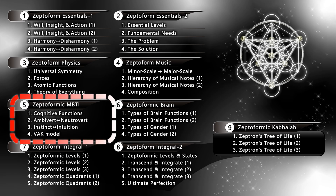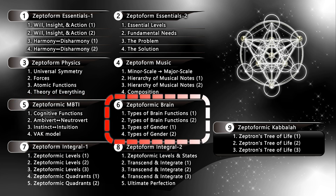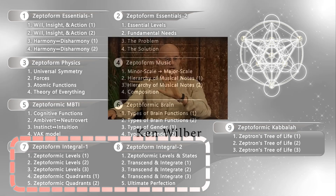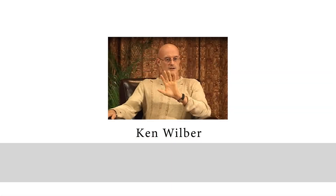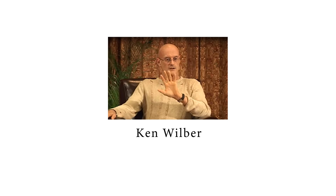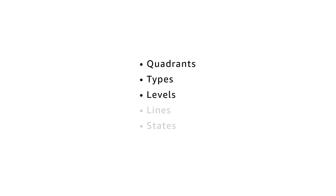Through this integration, we will be able to see how each type tends to use his or her cognitive functions. In module 6, the structure of a brain is integrated into the zeptoform. Through this integration, we introduced a new way of seeing gender categorization. In module 7 and module 8, we discussed zeptoform integral — that is the integration of the zeptoform theory and integral theory. Ken Wilber is the originator of integral theory. Integral means comprehensive, inclusive, whole, and balanced. The comprehensive map of integral theory uses five elements in order to integrate everything: quadrants, types, levels, lines, and states. And they are all geometrically integrated into the zeptoform.